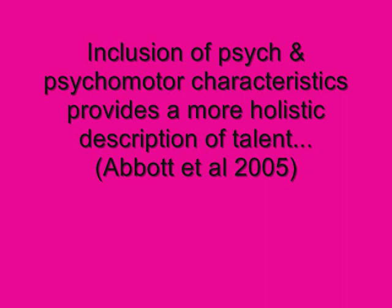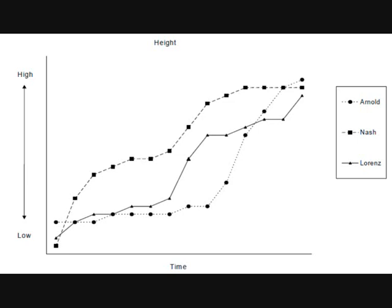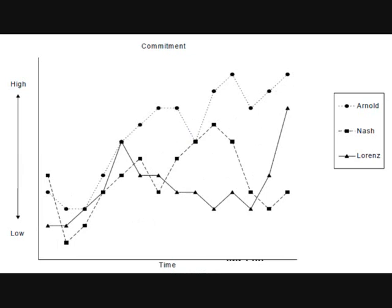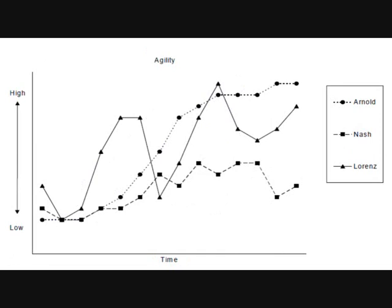Even if you acknowledged this fact and added the contributions of the three components to provide a total score of talent, this still does not provide us with an understanding of the interaction of these factors over time. We then looked at each factor monitored over time depicting the change in stability for each performer. You can see from the chart shown that there are considerable changes for all the gymnasts. The majority of the class now chose Arnold, as his values for height, commitment and agility were favourable at the final retest. However, a few in the class did consider Lorenz, arguing that a lack of stability in his components may indicate that he is progressing through a transitional period.